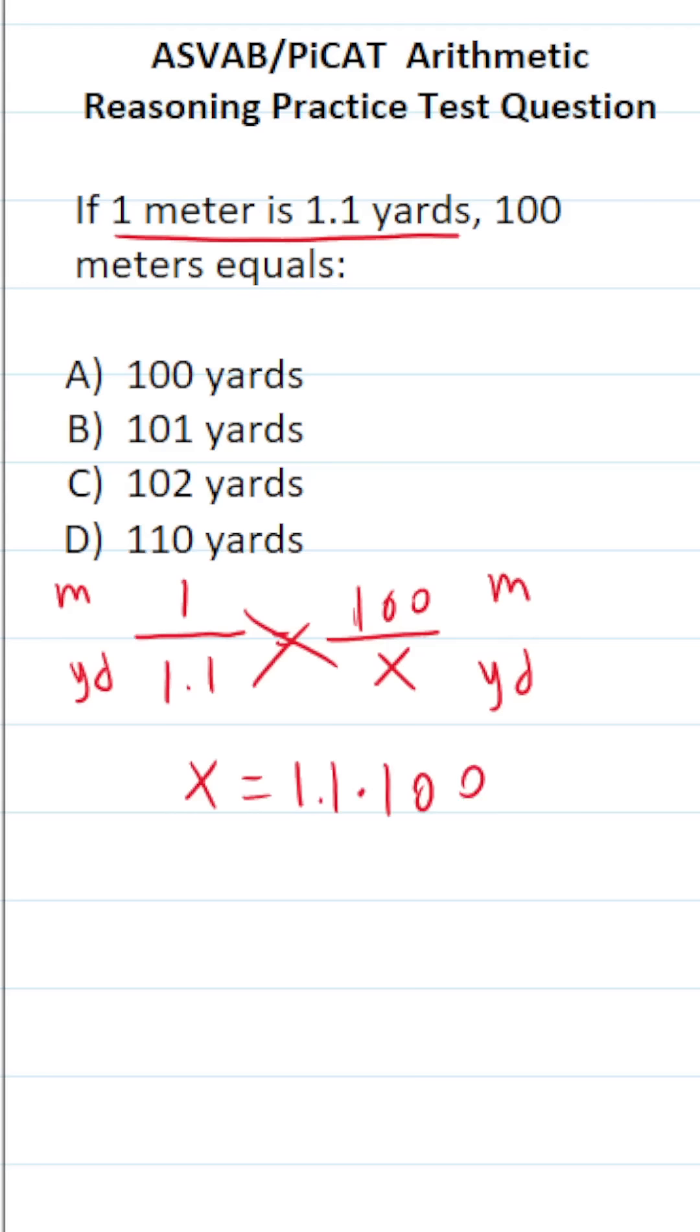This part is meant to be done mentally because you're multiplying 1.1 by a power of 10. Whenever you multiply a decimal by a power of 10, all you have to do is take note of how many zeros there are in the power of 10.